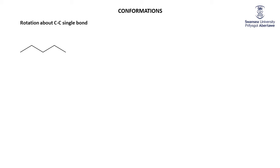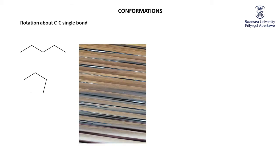So we'll start off with this easy one. That's pentane. That too is pentane. They look very different, don't they? They're both the same molecule — if you count the number of carbons in the chain, five carbons — but they are different conformations.